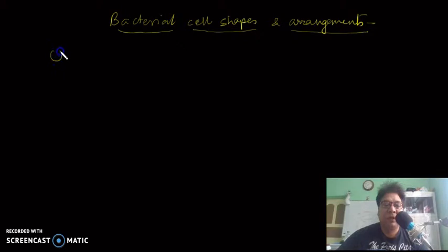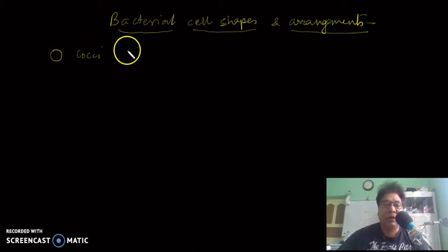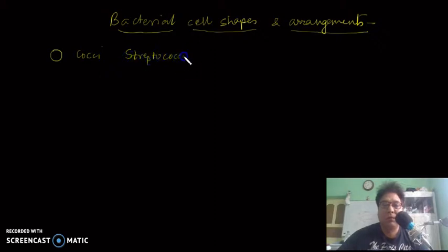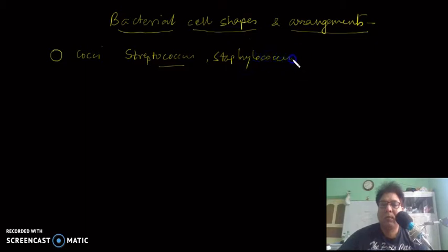Most bacteria have a spherical shape that is called cocci. The genera that belong to this group are Streptococcus, Staphylococcus, Diplococcus, and so on. They are all spherical bacteria.